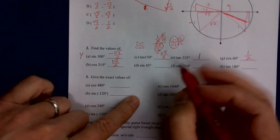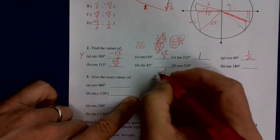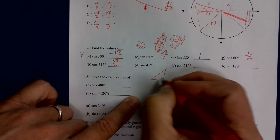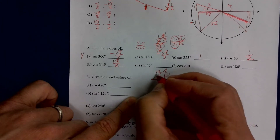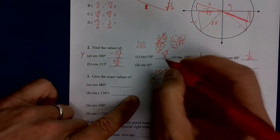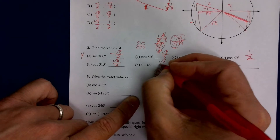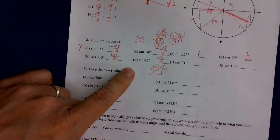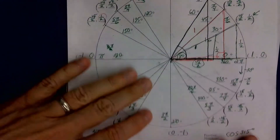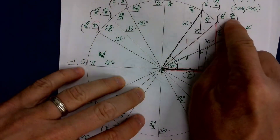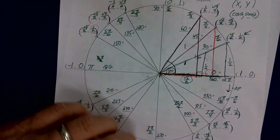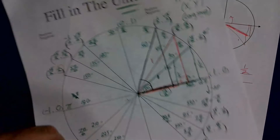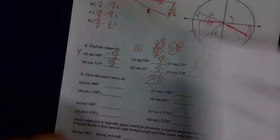Sine of a 45-degree angle: you can draw a 45-degree angle with sides 1, 1, and root 2. Sine is opposite over hypotenuse — that's 1 over root 2, which simplifies to root 2 over 2. Or you can look at the unit circle — the y value at 45 degrees is root 2 over 2.